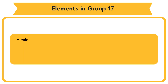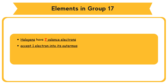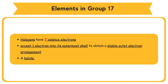All halogen atoms have 7 valence electrons. A halogen atom needs to accept one electron into its outermost shell to obtain a stable octet electron arrangement. A halide anion with a negative 1 charge is formed.